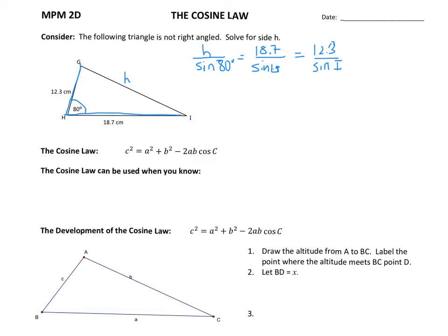The cosine law can be used when you know two sides and the contained angle. It's also used if you know all three sides and no angles, because the sine law will not work with that either. Those are the two cases where you want to use the cosine law.